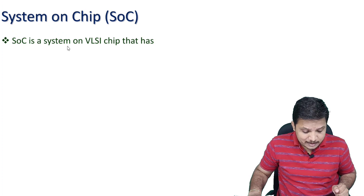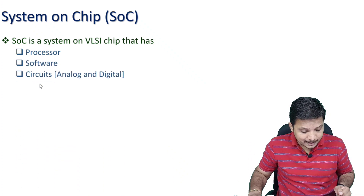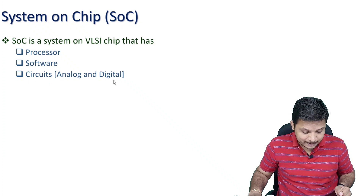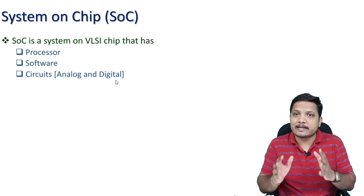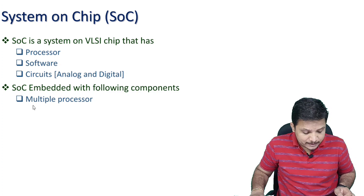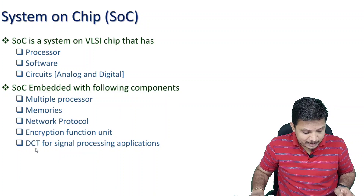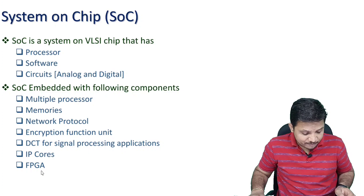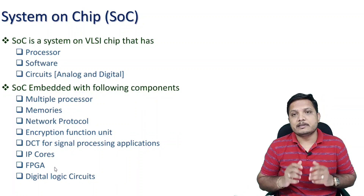SoC is a system on a VLSI chip that has a processor, software, and circuits — both analog and digital. SoC is embedded with different components including multiple processors, memories, networking protocols, encryption function units, discrete cosine transform for signal processing applications, IP cores, and even FPGAs in a single chip.